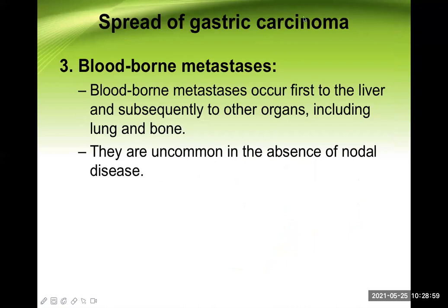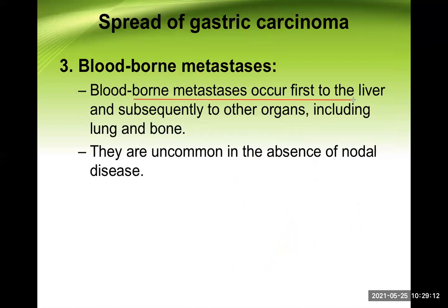The third type of spread is blood-borne or hematogenous metastasis. The stomach is drained by the portal vein, so blood-borne metastasis occurs first to the liver through the portal vein, and from there subsequently to other organs including the lungs and bone. Liver is the most important organ for hematogenous metastasis. Hematogenous spread is uncommon in the absence of nodal disease — nodal metastasis always occurs first. Epithelial malignancy usually metastasizes earlier via the lymphatic route, whereas sarcomas typically metastasize earlier through hematogenous means.